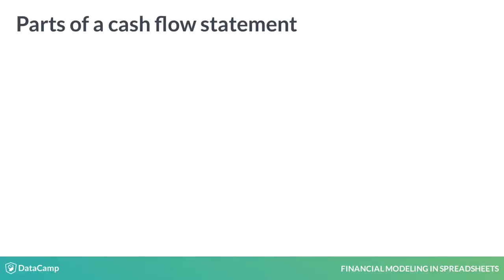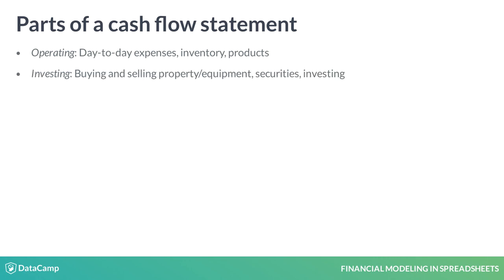The level of detail varies for cash flow statements, but they generally include operating expenses — the day-to-day work of the business. Investing sections involve the property and equipment a business owns, while financial includes money paid and borrowed from different sources.